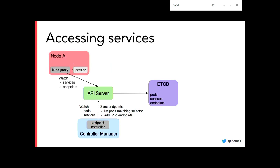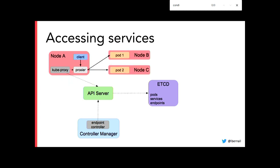Now that we have the endpoint object synchronized by the endpoint controller, if we want to access a service from a node or container, this is where kubeproxy enters into play. Kubeproxy is responsible for watching services and the endpoints associated with each service, and configuring something I call a 'proxure.' When the client connects to the service using the virtual IP, the proxure is responsible for sending traffic to the actual pods — routing me either to pod one or pod two in my example.